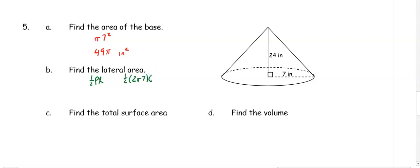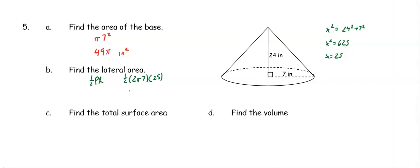We don't know the slant height yet, so we're going to use the Pythagorean theorem: x squared equals 24 squared plus seven squared. X squared equals 625, so x is 25. When we multiply we have one half times two times seven times 25 — remember, do not put your pi in the calculator — and we get 175 pi inches squared.